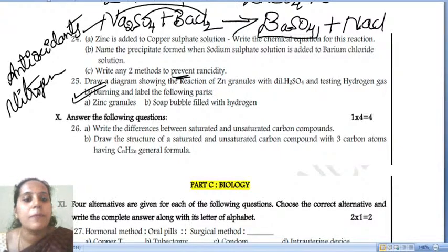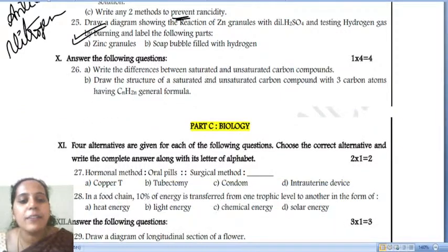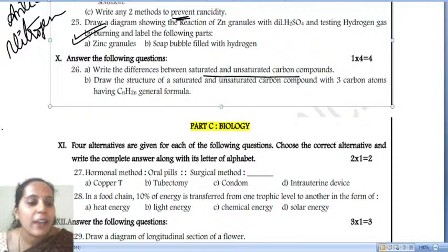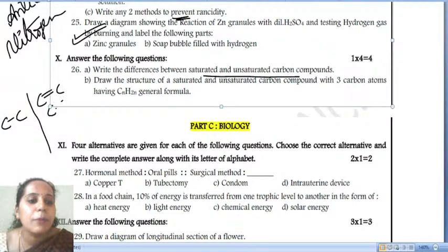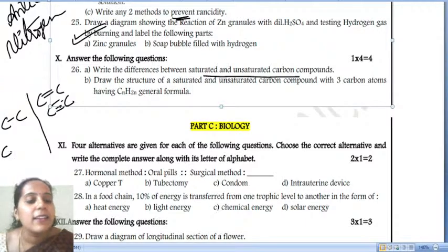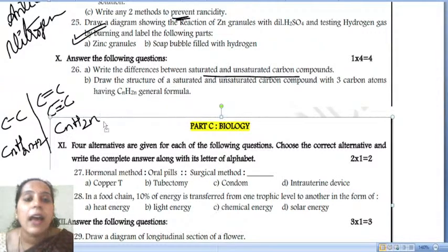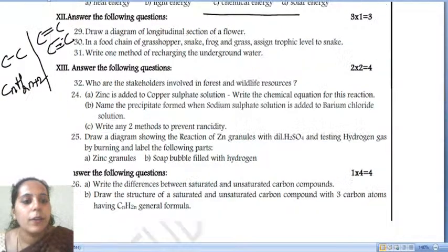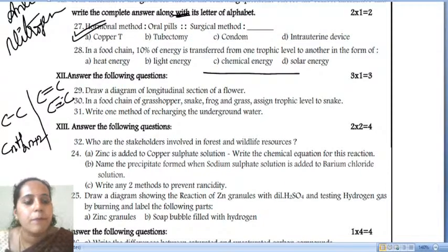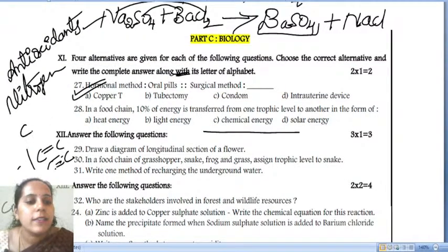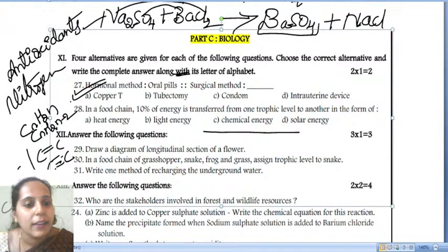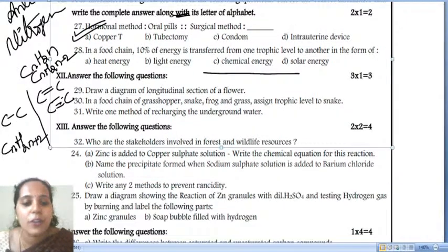Write the differences between saturated and unsaturated hydrocarbons. Saturated hydrocarbons have a single bond between carbon and carbon atoms; unsaturated have a double bond or triple bond. The general formula of alkanes is CnH(2n+2), alkenes is CnH2n, and alkynes is CnH(2n-2).